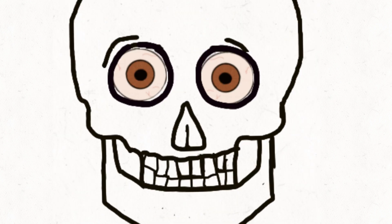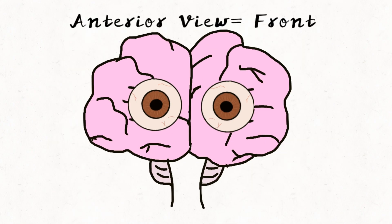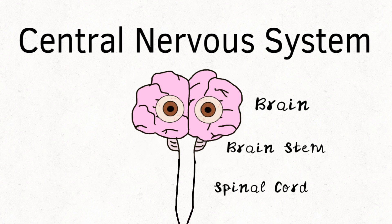It contains your personality, stores your memories, and allows you to think. This is the anterior view of your brain, in other words, the front of your brain. Here we have the brain, the brain stem, and the spinal cord. They are all part of your central nervous system.